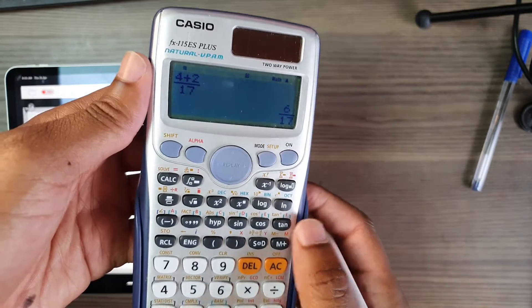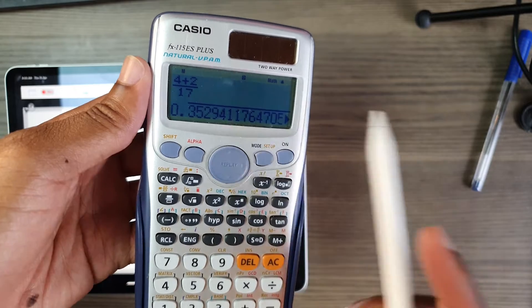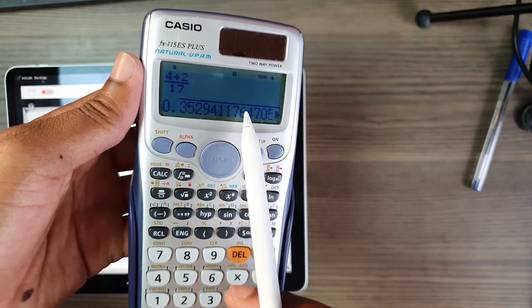Now if you want to get this in decimals, you're going to press this SD button. There we go, that's SD.